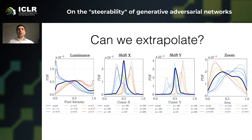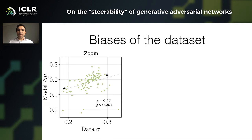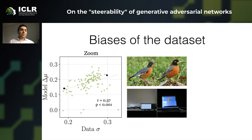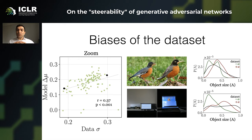We can do this for different directions and different transformations. Another question is: what is the relationship between data variability and the extent of these transformations? We plot sigma — the data variability — versus how easily you can transform. We show two extreme cases with Robin and the laptop. Because there are more examples of laptops with different sizes and camera distances, we can zoom them more than Robins, where we tend to see specific crops of the birds.